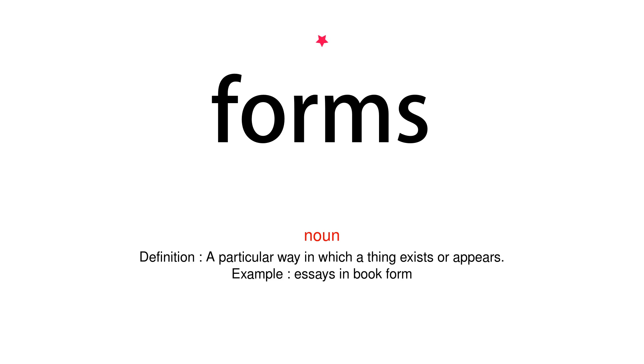Noun. Definition: A particular way in which a thing exists or appears. Example: Essays in book form.